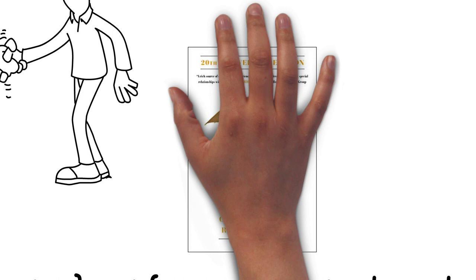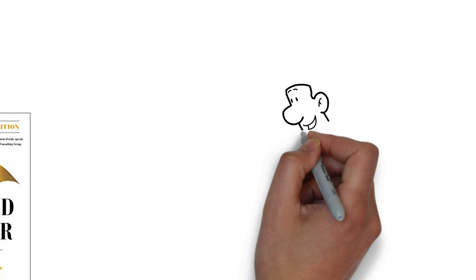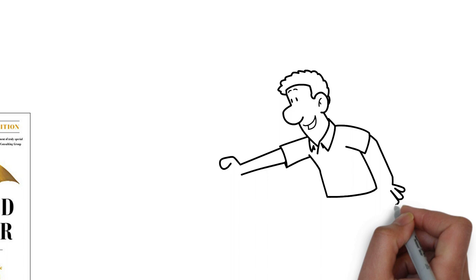This is where the trust equation comes in. The trust equation was developed by Charles Green, co-author of The Trusted Advisor, along with David Meister and Robert Goldford. They explored the psychology of trust by looking at professional services and how people relate to one another. The result of this study was the trust equation.